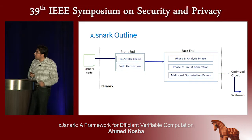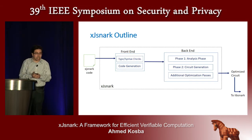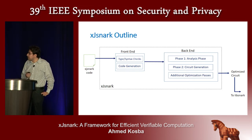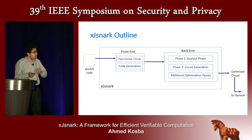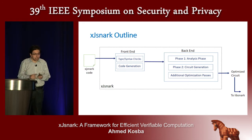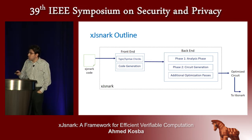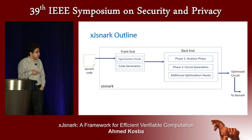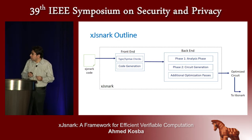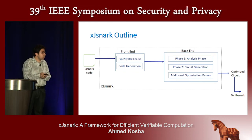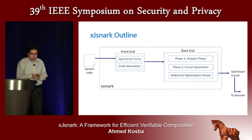The outline of XJSNARK: the programmer writes code in our XJSNARK extension, which is developed as a Java extension on top of the JetBrains MPS framework. It gets type-checked in the front end and transformed to Java code that generates the circuit. In the backend, before generating any constraints, we perform a complete analysis phase of the circuit to study how every variable is used and what the parameters are. Then in the second phase we generate the circuit and apply further optimizations. One key point is that we implemented all steps from high-level code to circuit generation, in order to track the programmer's intention and make better decisions.